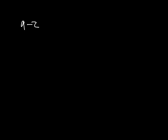Number 8 says find the difference between 9 and 2. Difference means subtract, so you're just going to subtract those. Example 9: find the difference between 3 and negative 5. If I'm finding the difference, that means I'm taking it away, which means I put a plus sign and get 8.